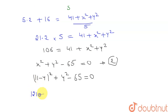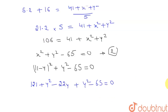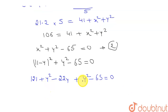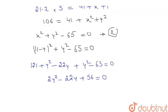Expanding using the formula (a minus b) whole squared: eleven squared is 121, plus y squared, minus two times eleven times y, which is 22y, plus y squared minus 65 equals zero. Combining like terms: 2y squared minus 22y plus 56 equals zero.